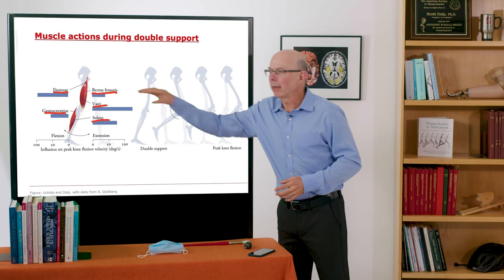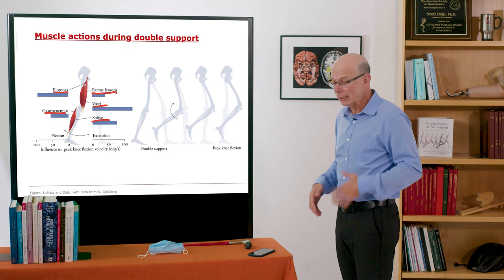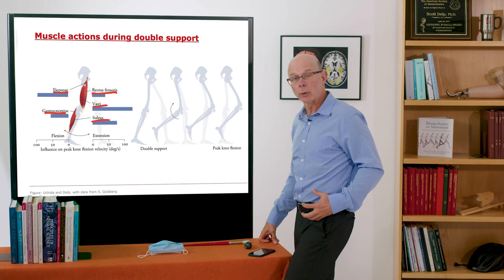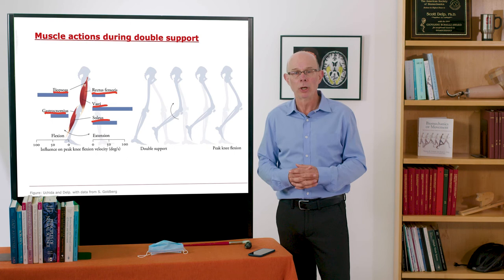The same is true on the other side. Iliopsoas, it turns out, a muscle that only crosses in front of the hip, is highly active during the swing phase. And it generates a large knee flexion acceleration. And weakness of that muscle, for example, can lead to diminished knee flexion during the swing phase and stiff knee gait.